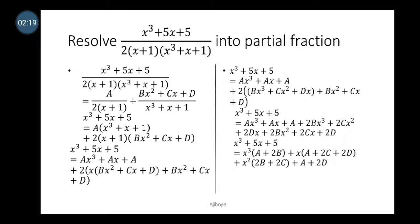What we need to do at this junction is to open the brackets, collect like terms, and then compare coefficients. We use A to open the first bracket, and x + 1 to open the second bracket. Doing so gives us Ax³ + Ax + A, plus x(Bx² + Cx + D) plus (Bx² + Cx + D), since the second bracket is multiplied by one.